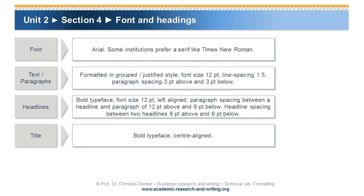Generally, a grotesque font such as Arial is prescribed; some institutions prefer a serif like Times New Roman. The main body text is to be formatted in justified style, font size 12, with a line spacing of 1.5. The spacing above and below the paragraph should be 3 point. Headlines are to be of a bold typeface with a font size of 12, left aligned. Paragraph spacing between a headline and a paragraph is 12 point above and 6 point below, while spacing between two headlines would be 6 point above and below. The title of the work is to be of a bold typeface and center aligned.